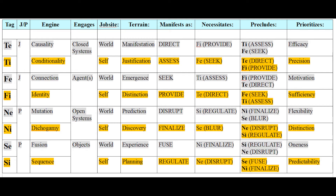You can also see in this table which functions are precluded by the existence of NE — at least two of them: NI and SE. It necessitates SI, because NE and SI are inverse proportionals, just as TE and FI are inverse proportionals. So we know an ESTJ is going to be not particularly deft with their own feelings.